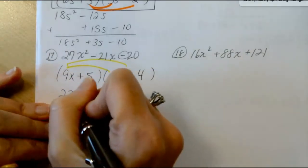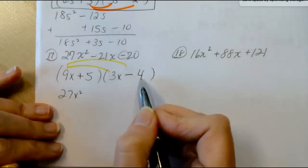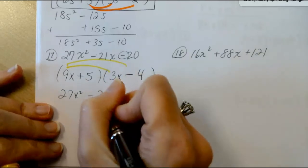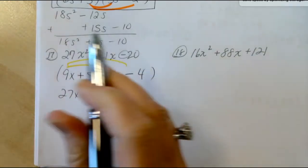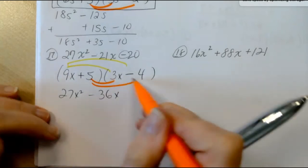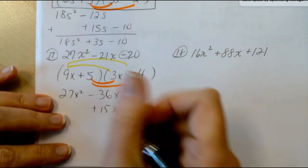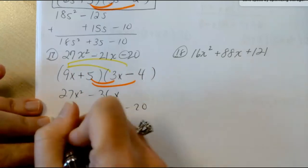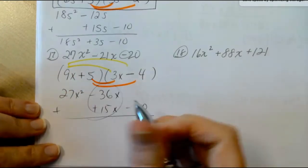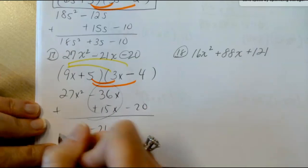9 times 3 is 27x squared. 9x times negative 4 is negative 36x. Take the 5 through. 5 times 3x plus 15x. 5 times negative 4 is negative 20. Add them up. And this is giving us a negative 21x in the middle, which is what we want. And we have our answer.